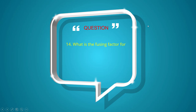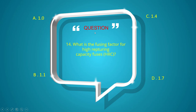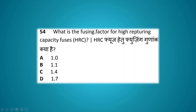What is the fusing factor for high rupturing capacity fuses? Options: 1.0, 1.1, 1.4, 1.7. The answer is 1.1.